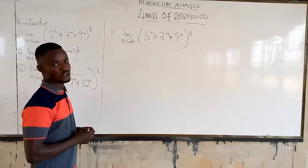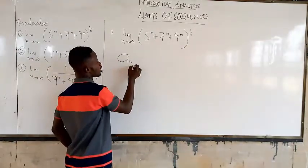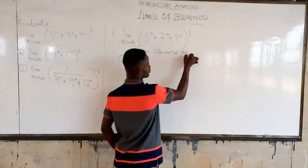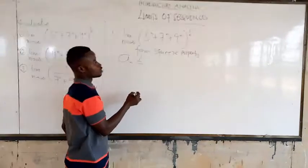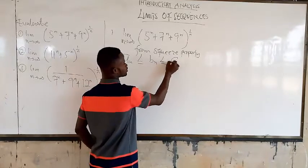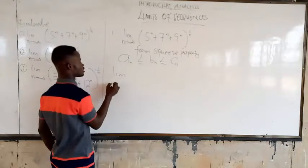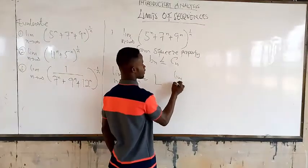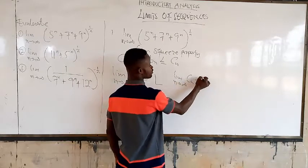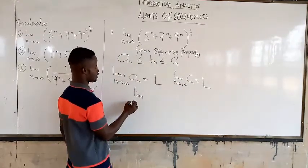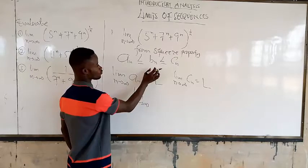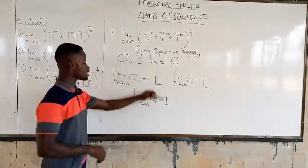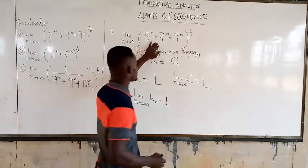Looking at this, from the squeeze property, we know that if a_n ≤ b_n ≤ c_n, and you take the limit as n approaches infinity of a_n and get L, and you take the limit as n approaches infinity of c_n and also get L, then you can say that the limit as n approaches infinity of b_n will also equal L. So we have established this already, and now we are going straight to solve this first problem.